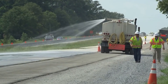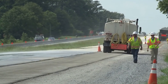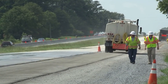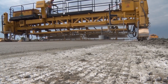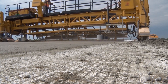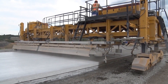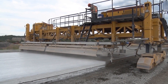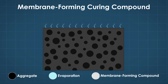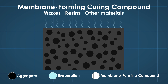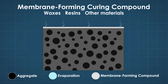Wet coverings or water spraying are the most effective ways to conventionally cure concrete. However, for practical reasons, concrete pavements are nearly always cured through the application of liquid membrane-forming curing compounds. These membrane-forming curing compounds are composed of waxes, resins, and other materials that act as a moisture barrier, slowing the evaporation of moisture from the pavement surface.